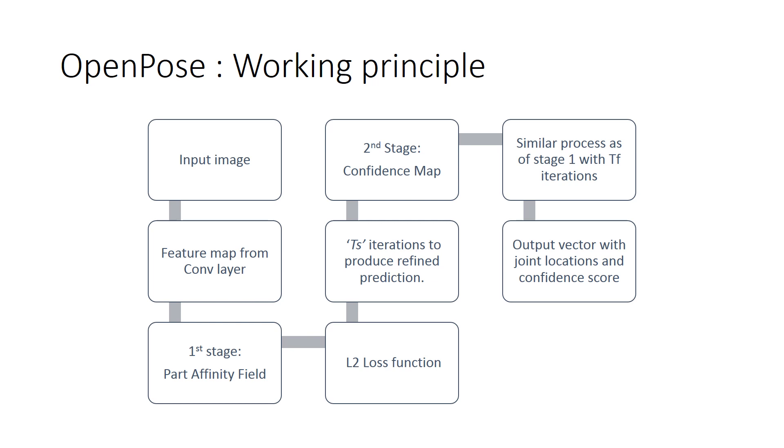The refined output is then fed to the second stage. The second stage will produce confidence map for individual nodes. Each confidence map produces a two-dimensional representation of the probability that the body part is located at that pixel. Again, it runs for a number of iterations. However, the number of iterations in the second stage is less compared to the first stage since the refined prediction is obtained from the first stage.